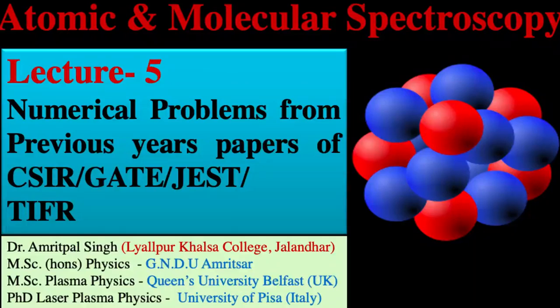Hello, my dear students. I welcome all of you again to this series on atomic and molecular spectroscopy. In the previous four lectures we discussed the Bohr spectra of hydrogen atom, energy spectral lines of hydrogen and hydrogen-like spectra, the first line and series limit of the Bohr spectrum, the Rydberg atom and the Rydberg constant for finite and infinite nuclei, limitations of Bohr theory, the Sommerfeld-Bohr model, and the existence of elliptical orbitals.